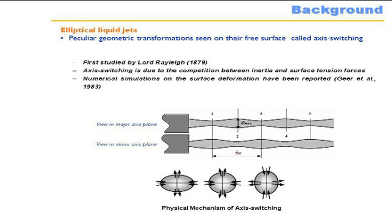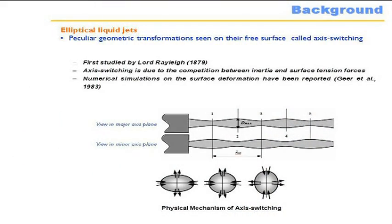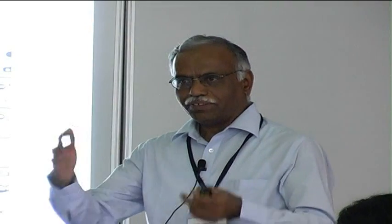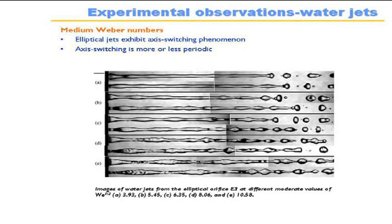This is what happens with axis switching in normal jets. We created elliptic orifices — and making an orifice of this nature was itself a fairly difficult issue at that time. We tried to make equivalent area orifices with different aspect ratios, ranging from 1 all the way up to 5.84. We created a number of elliptic orifices and looked at how the jets behave, taking pictures from two angles and examining them at different Weber numbers.